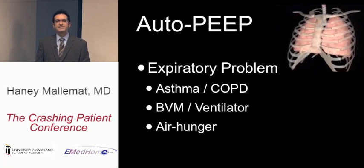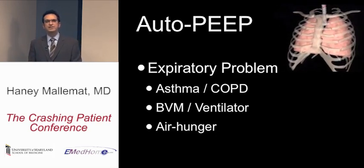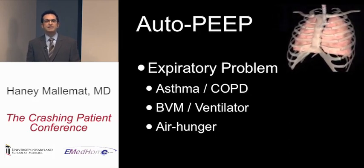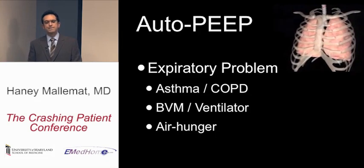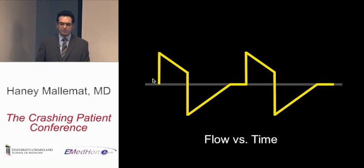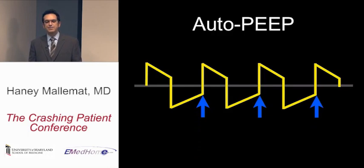This can also happen if you're aggressively ventilating a patient — with a bag valve mask or a ventilator — providing a high respiratory rate without giving enough time for air to come out. Patients can also trigger this themselves with air hunger, triggering the ventilator before the previous breath has fully expired, leading to dynamic hyperinflation. On a flow-time tracing, you can see that with auto-PEEP, expiratory flow doesn't return to baseline at the end of expiration — unlike normal breathing.